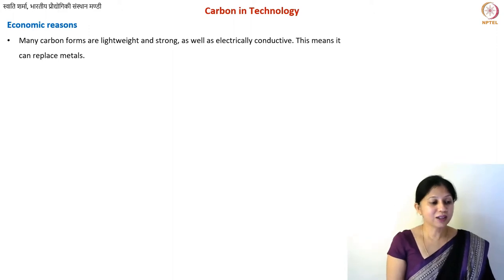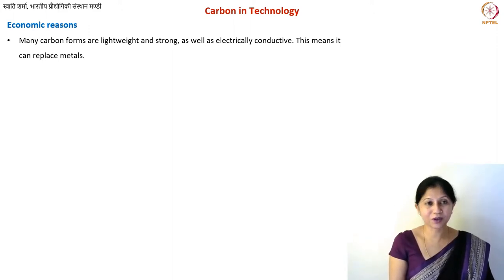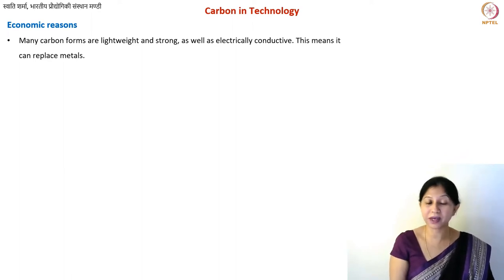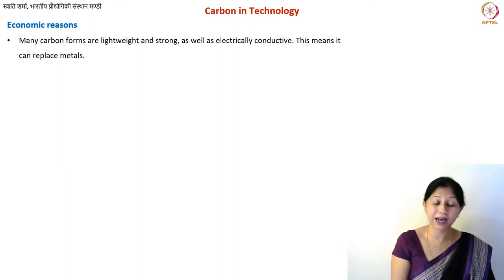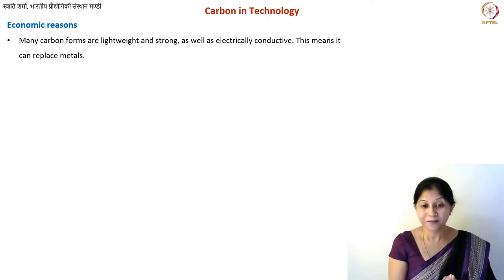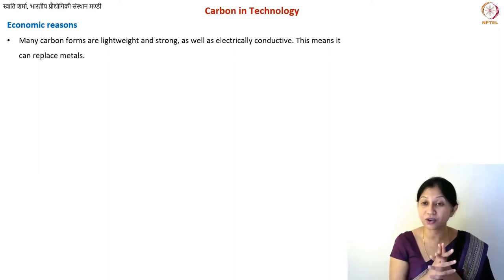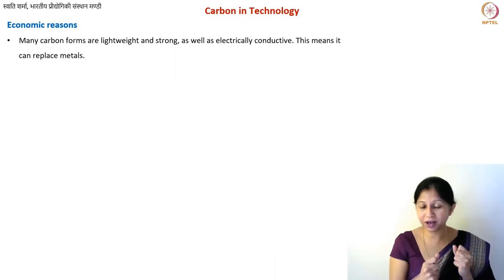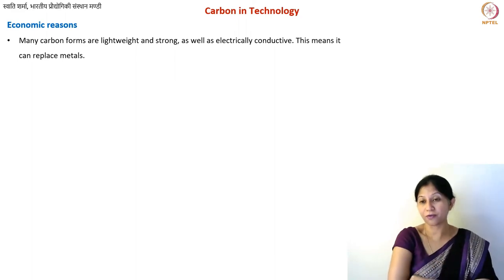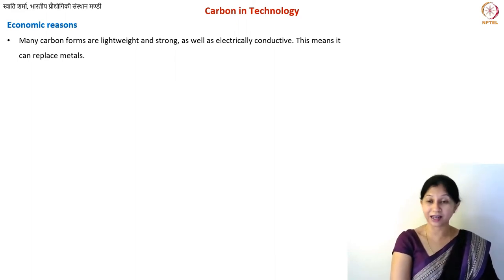Carbon is a light element, so most carbon materials happen to be very lightweight. They are also mechanically very strong because carbon forms these long sheet-like and chain-like molecules with covalent bonds, which are very strong bonds. That is why you have materials that are both light and strong — a very important property of a lot of carbon materials.